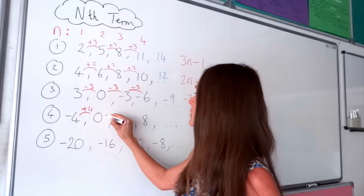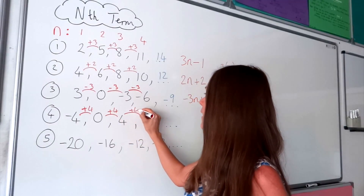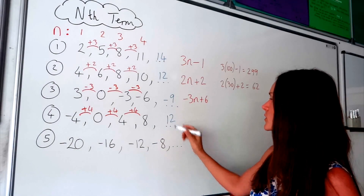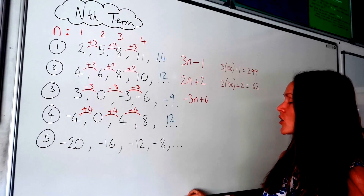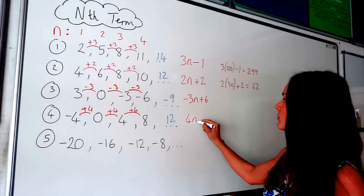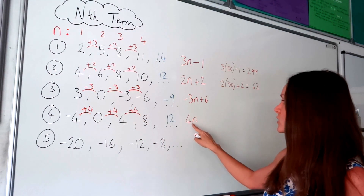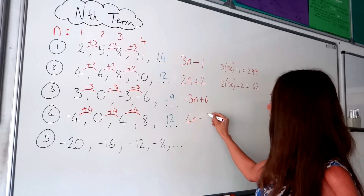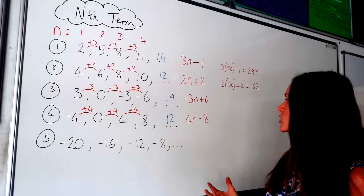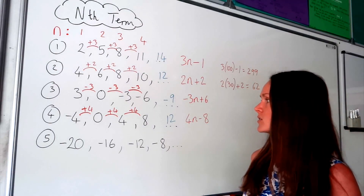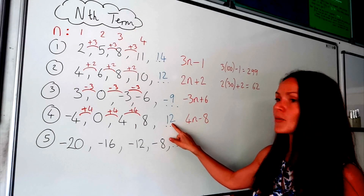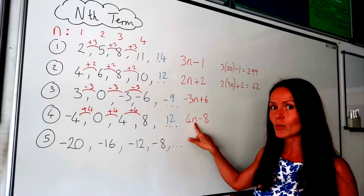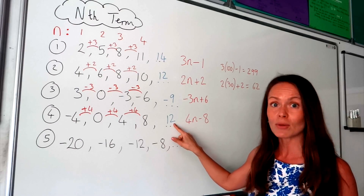This time we're adding 4 each time. To find the next term, I add 4 to this number, so 8 plus 4 is 12. To find the nth term, I write down positive 4n, because we're adding 4 each time. How do I get from 4 to the first number in the sequence? I have to take away 8. So the formula is 4n minus 8. Testing with the fifth number, n is 5: 4 times 5 is 20, and 20 take away 8 gives me 12. So it's correct.